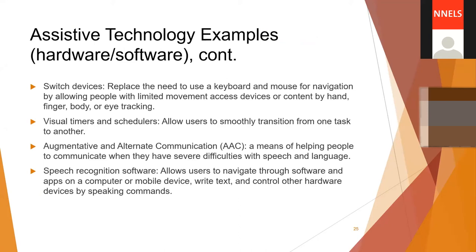Visual timers and schedulers allow users to smoothly transition from one task to another. Augmentative and alternative communication, AAC, is usually a physical and portable device that helps people communicate when they have severe difficulties with speech and language. Speech recognition software — familiar to many through Siri, Google Home, and Amazon Echo — allows users to navigate software and apps, write text, and control hardware devices by speaking commands. Assistive tech that uses speech recognition is more powerful, more customizable, and has many more settings than consumer voice assistants.